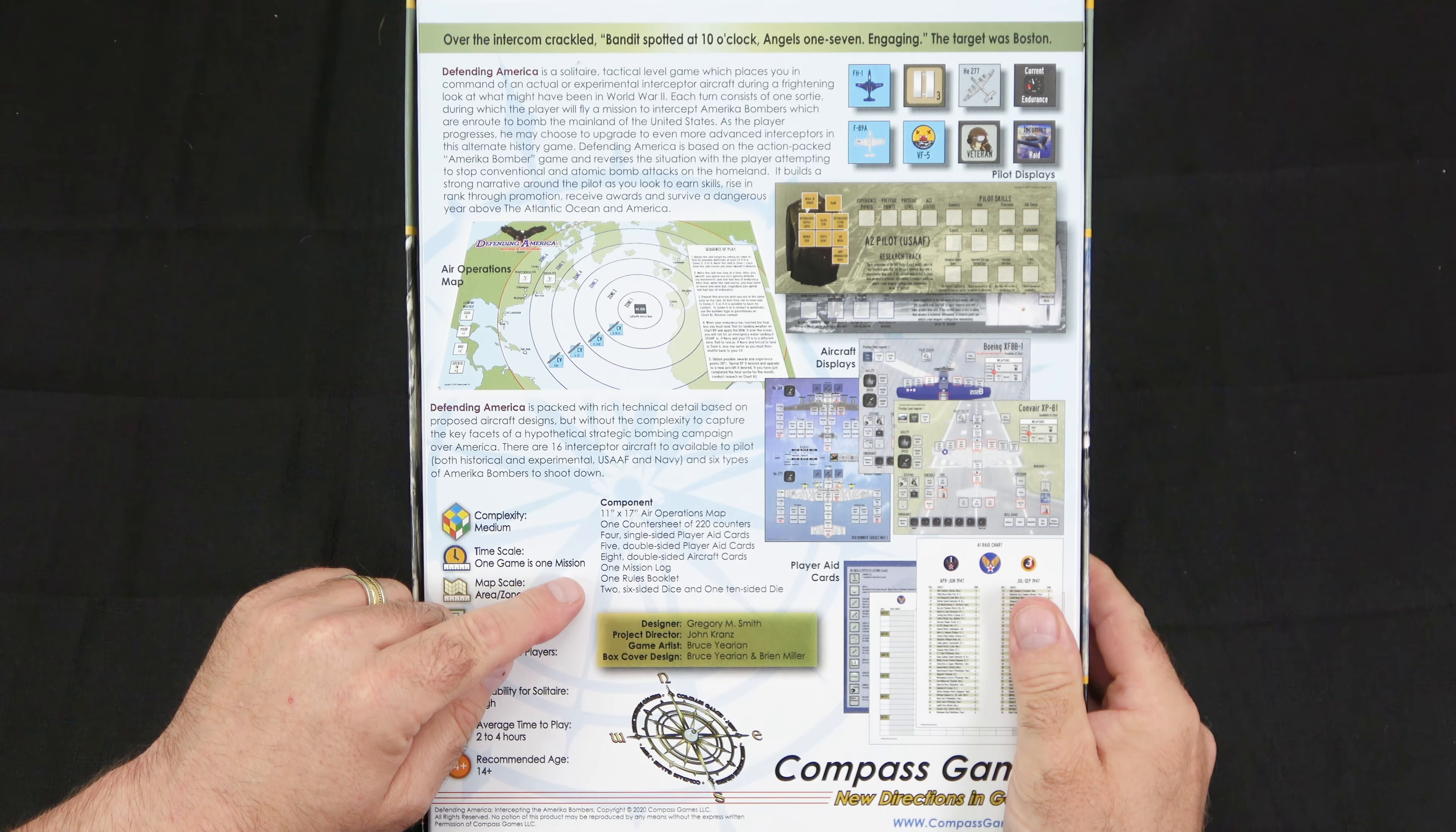the bomber display mats, pilot status chart, the game markers, how to read the markers, all the things we've already looked at, then the sortie log sheet so you can keep track of all your sorties, the game scale parts inventory,